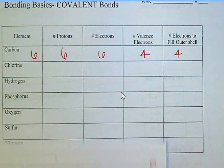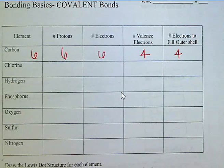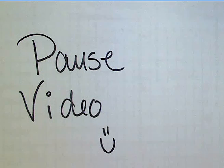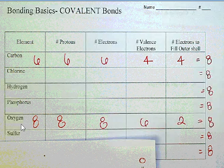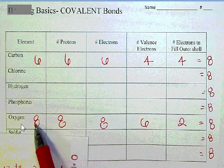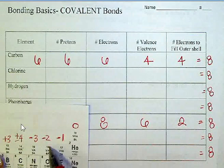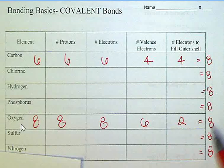Go ahead and finish filling out this chart — I will do one more after you've gone through and done the rest, so please pause the video and work through these using your periodic table. The other one I did for you is oxygen. Oxygen has atomic number eight, so it has eight protons and an equal number of electrons. It is in group 16, so it will have six valence electrons, meaning it needs two more to get to eight.